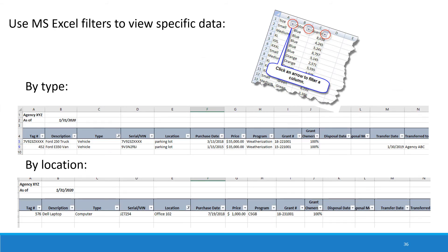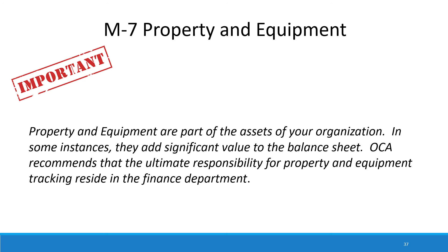You can use the filters in the Excel spreadsheet to filter however you need — for example, if you just want to look at vehicles, or equipment at a certain location. Another use is when sending the list to OCA for review: you could filter it to just show items applicable to LIHEAP, weatherization, and CSBG.